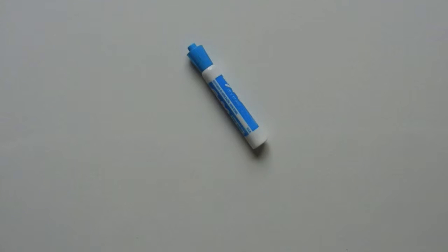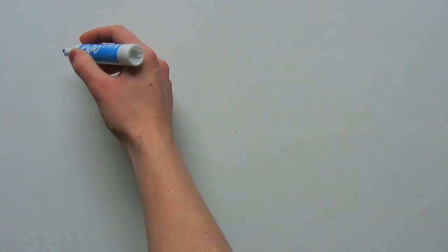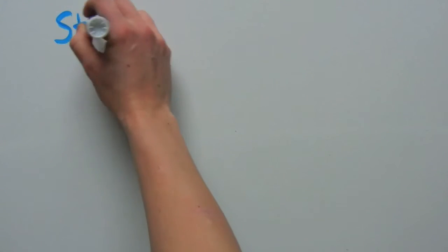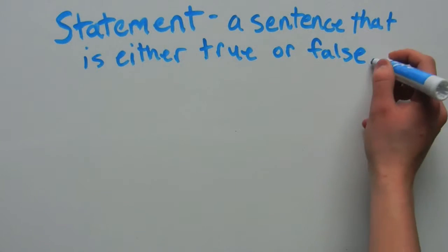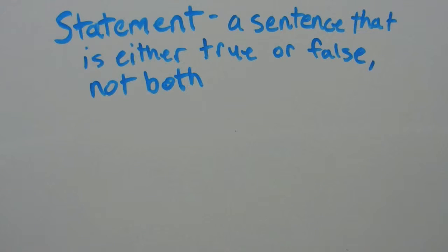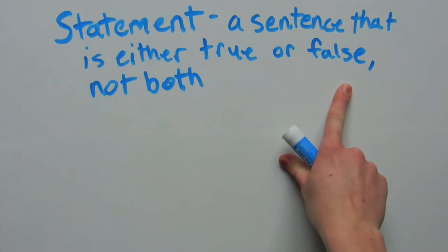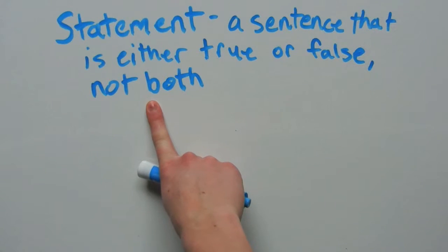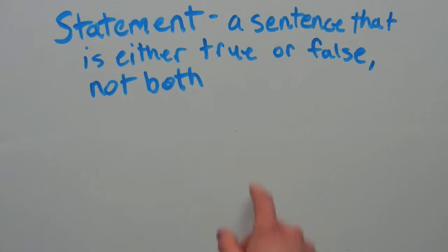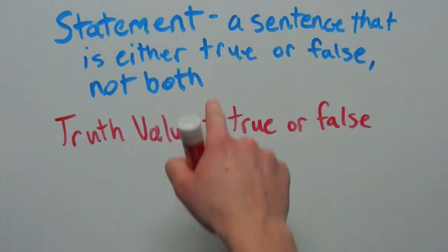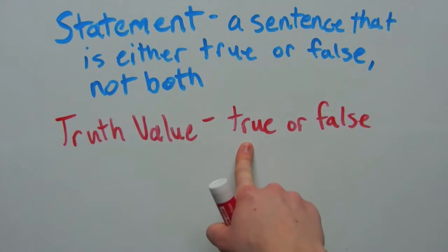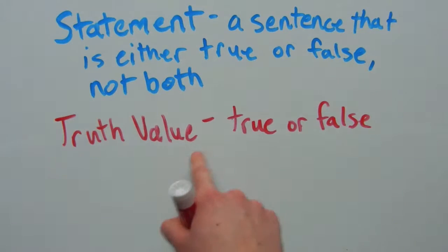Before we jump into geometry, we're going to go over some logic and reasoning first. We're going to start off by figuring out what is a statement. A statement is a sentence that is either true or false, but not both. Whether that statement is true or false is known as the truth value. A statement can have a truth value that's true, or a statement can have a truth value that's false.